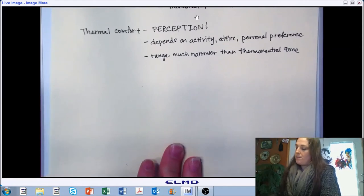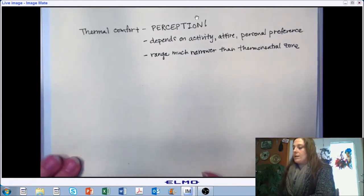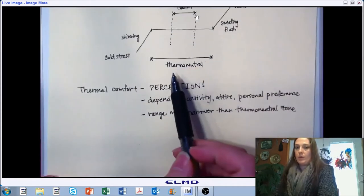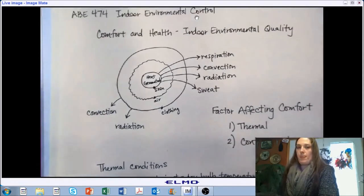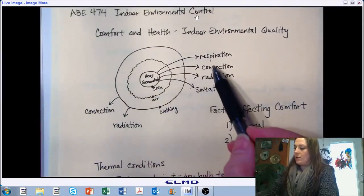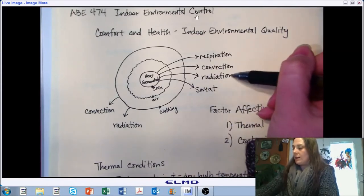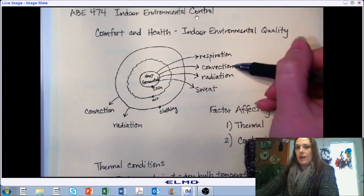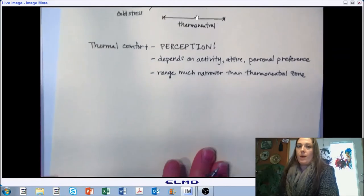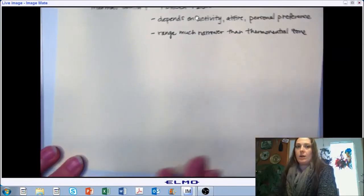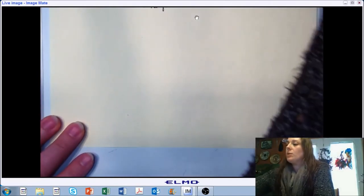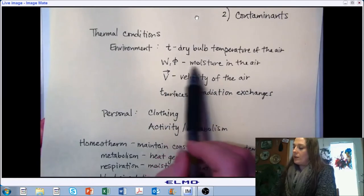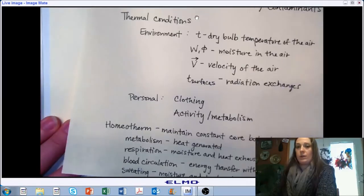Some of the things that can impact the way we feel include temperature, but they're not limited to temperature. We mentioned activity, attire, personal preference. When we looked at our schematic, we talked about radiation, convection, respiration, sweat. What kind of things impact convection and how much energy is lost to the environment? It's not limited to just the environmental temperature. So while we're talking about thermal comfort, how the environment feels and how we react to it is not just limited to the dry bulb temperature. We also need to consider moisture, velocity, and temperature of the surfaces, which are related to our radiation exchanges.